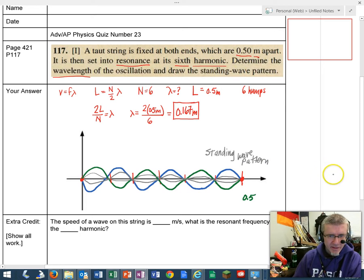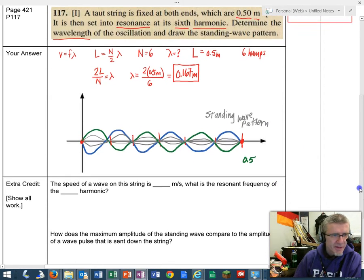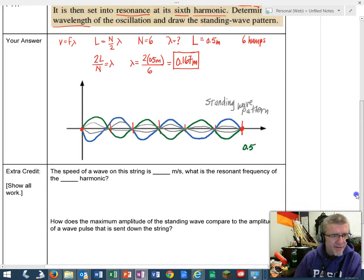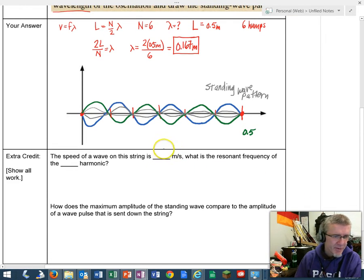Now for extra credit, just a quick hint. We're going to use another equation that I wrote on this, and I have given everyone a different meters per second, somewhere between 6, 7, 8, 9, and a resonant frequency somewhere between the first, second, third, fourth, fifth harmonic or so. So look for your numbers here that you're going to use,